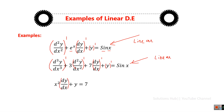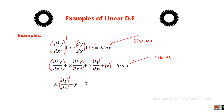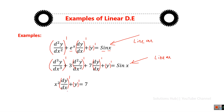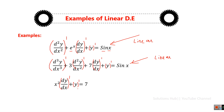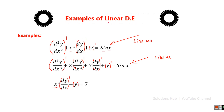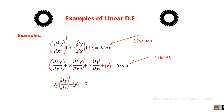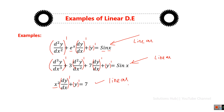In the third example, the highest order derivative is the first derivative, so order is 1 and degree is 1. The dependent variable y appearing in the equation has exponent 1. There is no product of dependent variable and derivative, and no transcendental function of the dependent variable. Although x² appears, that is the independent variable, so there is no harm. This equation is also a linear differential equation.